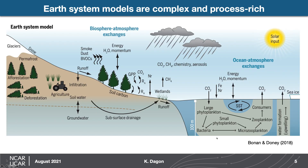The short answer is that earth system models are very complicated and are trying to parameterize and represent many different processes. This figure from Bonin and Dhoni shows the variety of processes represented by an earth system model — it gets very complicated very quickly. Some of these processes we don't have complete observations or perfect theoretical understanding to inform the equations that go into models, and so that leads to different representations in different models.